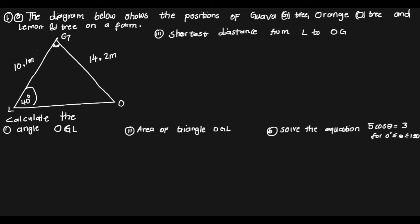Let's look at the data we have. We have certain distances: one corresponds to angle O, giving us side little o, and another corresponds to L. Our question asks us to find angle OGL. To choose between the cosine rule or sine rule, it depends on the data available. If you have two distances and one angle and are trying to find a second angle, the sine rule must be used.